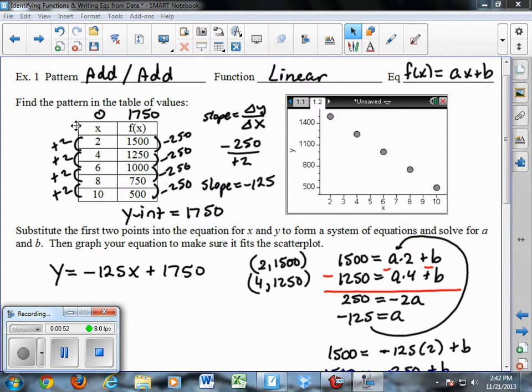To find the y-intercept, you can go backwards in the table. If we added 0 to the table, that means we'd have to go back 2, and it means we'd have to add 250 to get up to the next higher value in the table, 1750. So here's my equation, y equals negative 125x plus 1750.